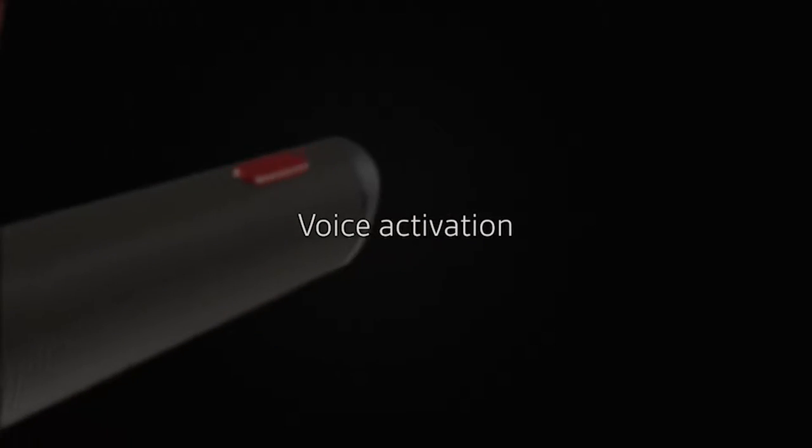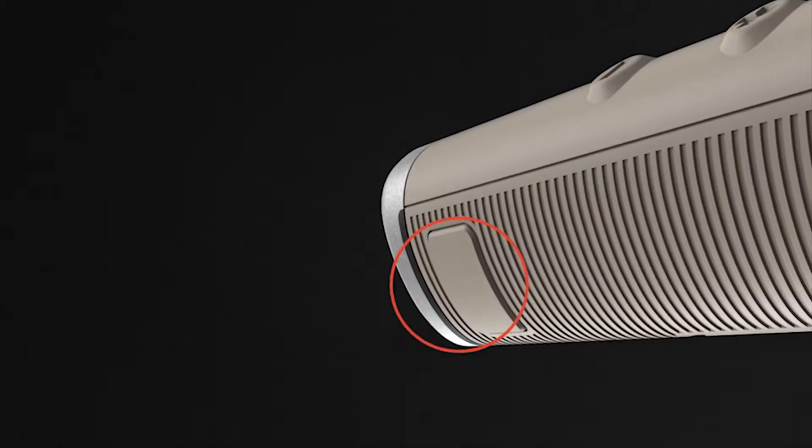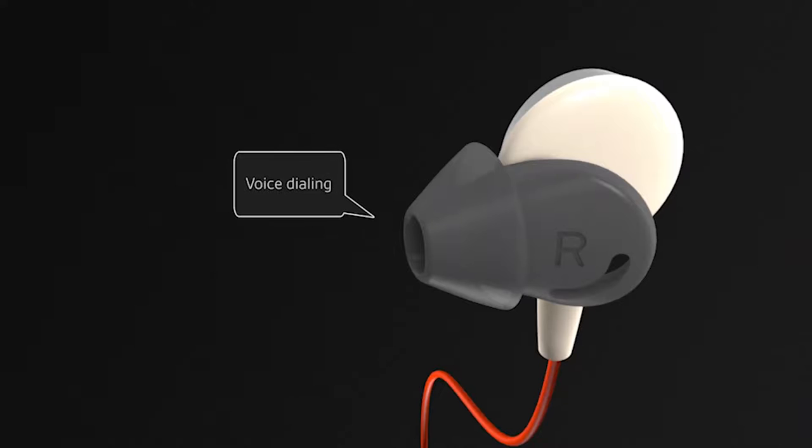Activate Siri, Google Now or Cortana with the simple touch of a button. Press and hold the call button for two seconds until you hear the tone. Wait for the phone prompt to activate voice dialing, search and other smartphone voice controls.